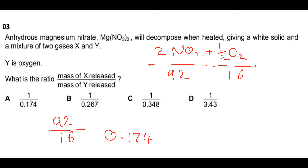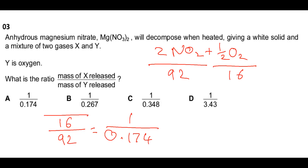The ratio of mass of X to mass of Y is 92/16. Calculating Y/X gives 16/92 = 0.174, but since the question asks X upon Y, the ratio is 1/0.174, which corresponds to option A.